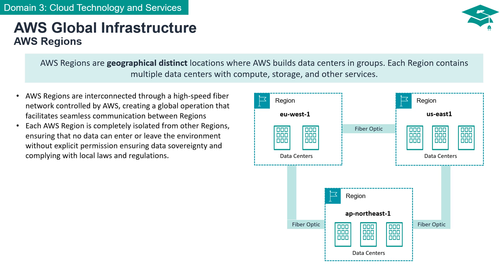While regions communicate seamlessly, they also uphold stringent data isolation. Each AWS region is a self-contained entity, ensuring that data remains confined within its borders unless explicitly allowed. This not only bolsters data sovereignty but also aligns with local regulations and laws.